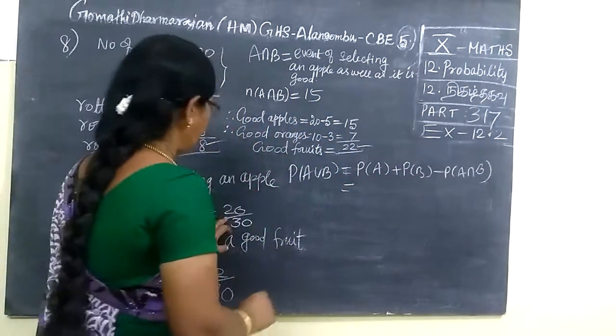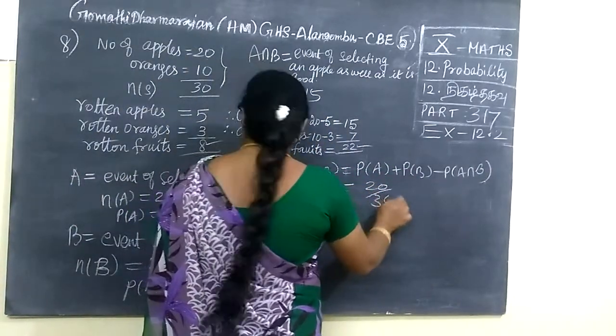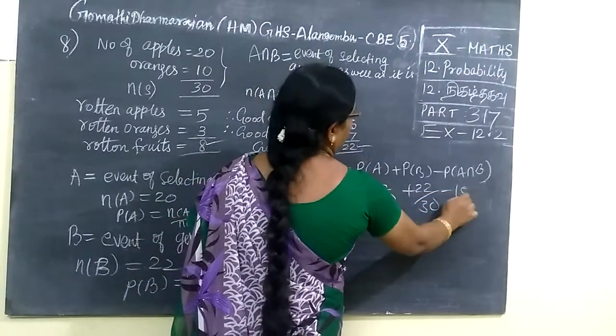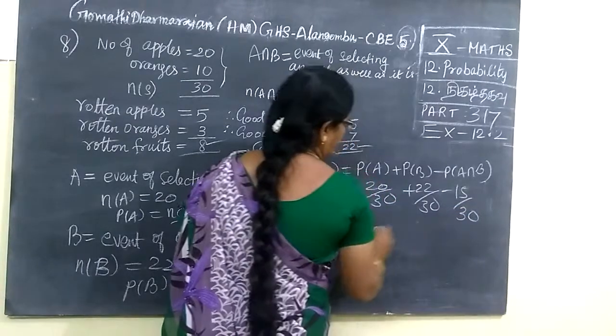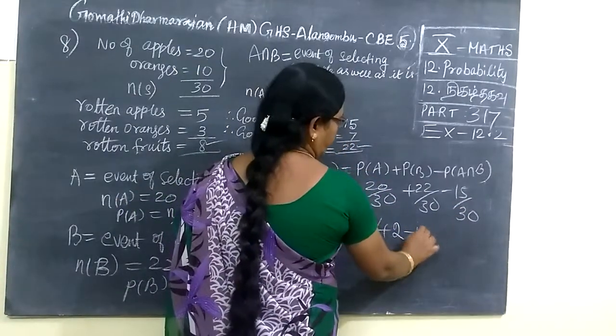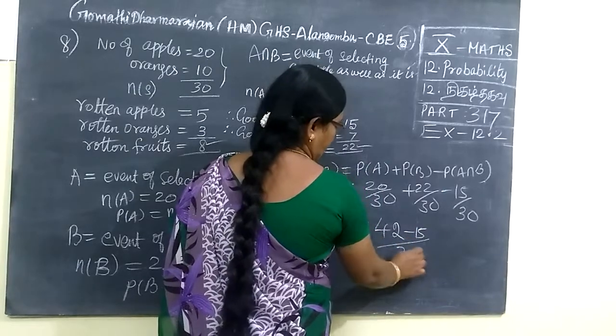P of A is 20 by 30, P of B is 22 by 30 minus P of A intersection B is 15 by 30. So 20 plus 22, 42 minus 15 by 30.